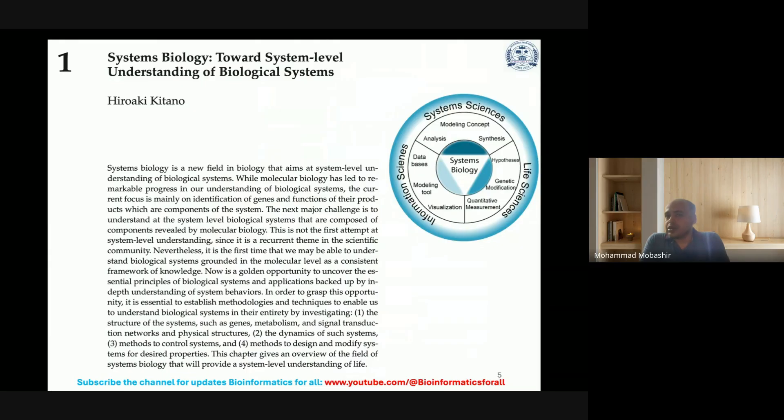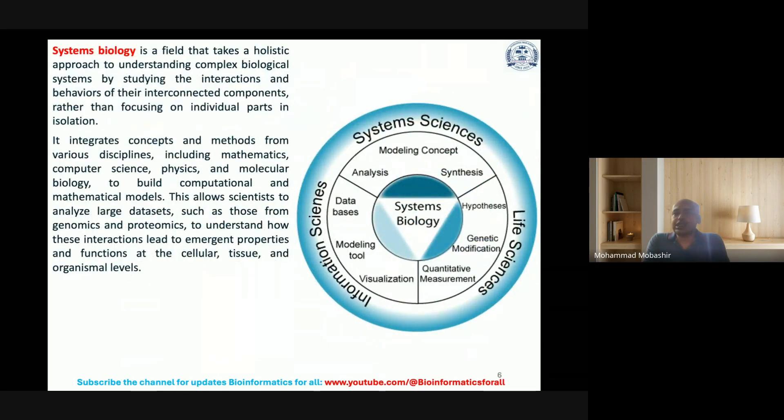System sciences include modeling, concept analysis, and synthesis. Information sciences include computer science, databases, modeling tools, and visualization. Life sciences include biological hypothesis, genetic modification, and quantitative measurement. Systems biology takes a holistic approach to understand complex biological systems by studying the interactions and behaviors of interconnected components rather than focusing on individual parts in isolation. It integrates concepts and methods from mathematics, computer science, physics, and molecular biology to build computational and mathematical models.